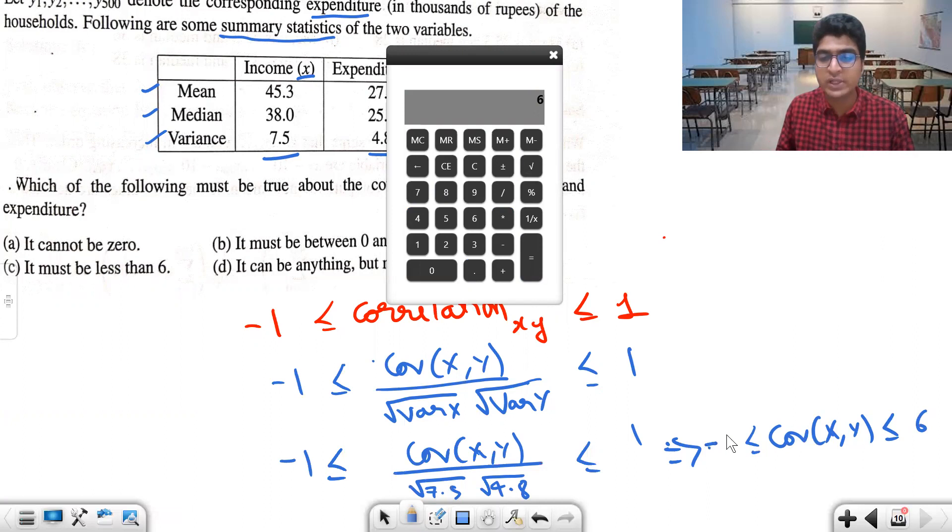Or greater than or equal to minus six. So the answer is C: it must be less than six. That's it.